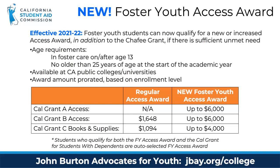The age requirements include being in foster care on or after age 13 and not being older than 25 years of age at the start of the academic year. The Foster Youth Access Award has the same amounts as the Students with Dependents Award: up to $6,000 for Cal Grant A and B and up to $4,000 for Cal Grant C. It is available for students attending a public California college, is prorated based on enrollment level, and the Cal Grant A Access Award is payable at a community college and will not be placed on community college reserve.